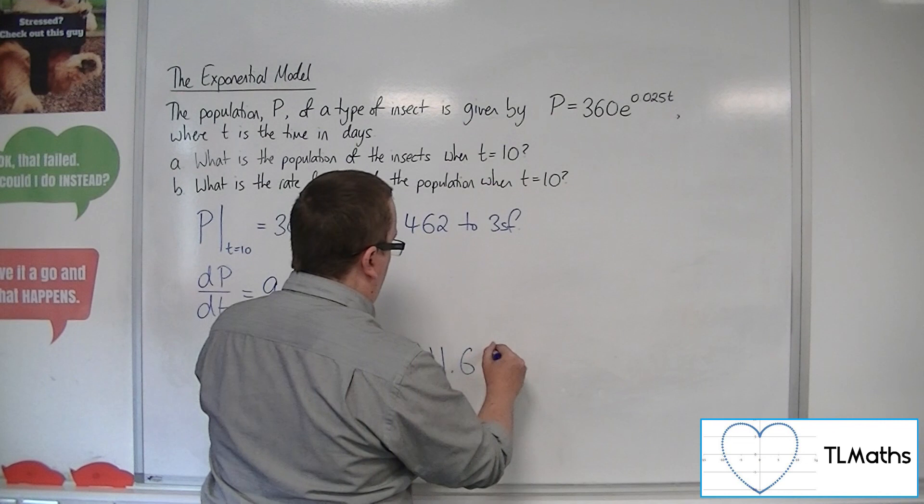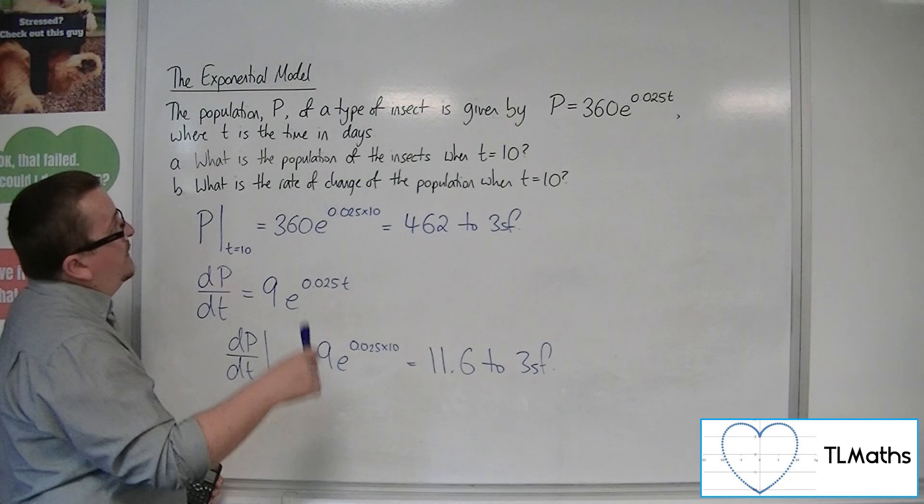So 11.6 to 3 significant figures. So the population is increasing at a rate of 11.6 when t is 10.